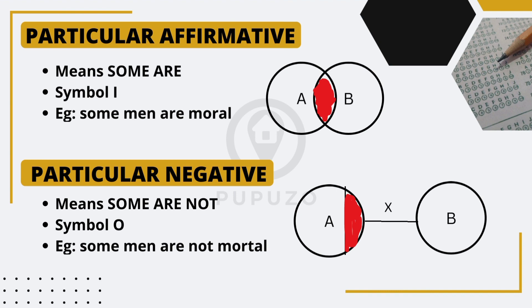Lastly, we have the particular negative proposition, symbolized by O. It indicates that at least some part of the subject does not belong to the predicate. An example of a particular negative proposition is 'some men are not mortal,' suggesting the existence of a subset of men who are not part of the mortal category.